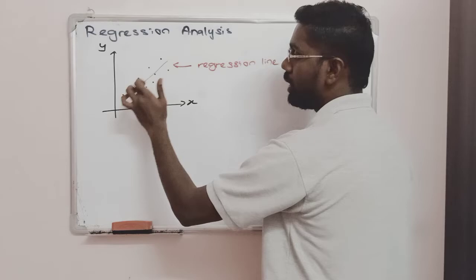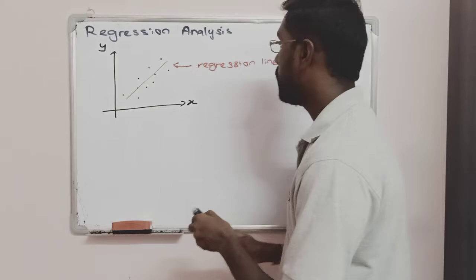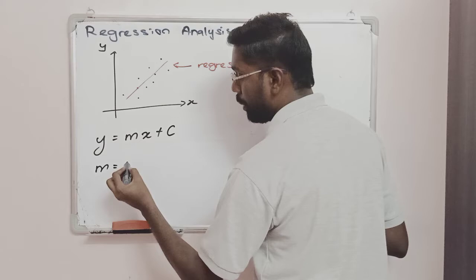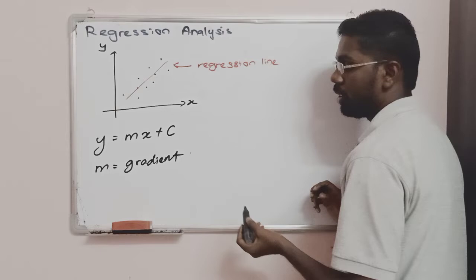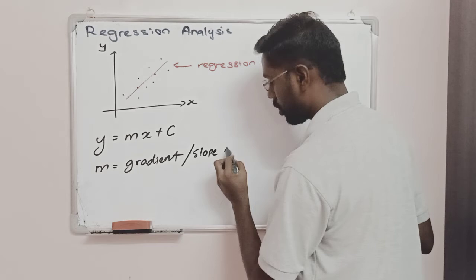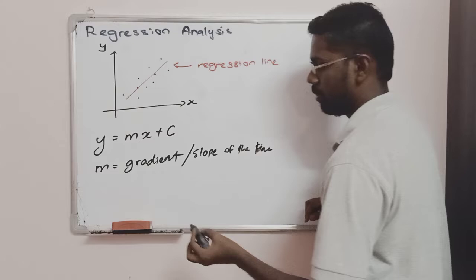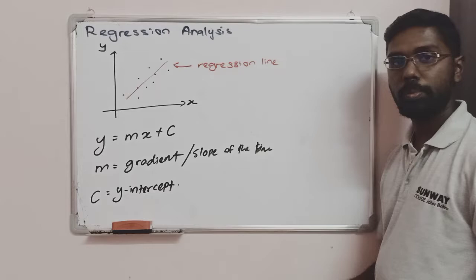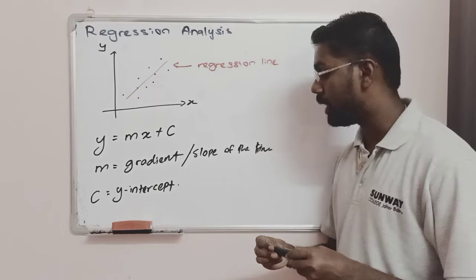This regression line will have an equation since it is a straight line. We are going to have a straight line equation where it is y equal to mx plus c. Here, m is going to be the gradient or the slope of the line, and c is going to be the y-intercept.